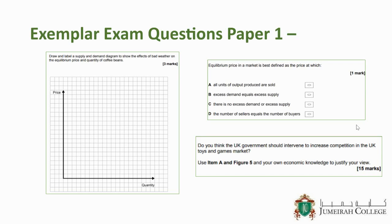You can see an example of the questions that we would have in paper one. You've got an MCQ question there. In economics, we draw lots of diagrams, so you may have a diagram question worth three marks, where you will have to draw and fully label a supply and demand diagram. We have 15 mark questions, which are the longest mark questions in both papers. In that question, you will need to analyze and build evaluation. In this case, the question asks you to decide if you think the UK government should intervene to increase competition in the UK toys and games market. It's really important that our students are reading the news, so that they find it easier to build applications.